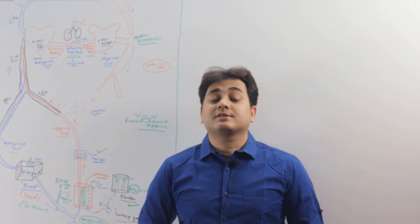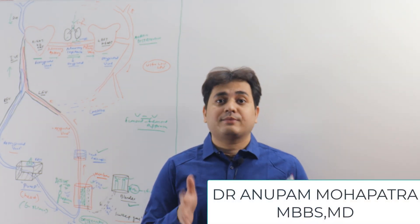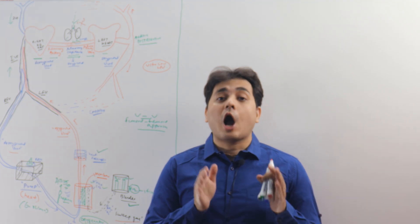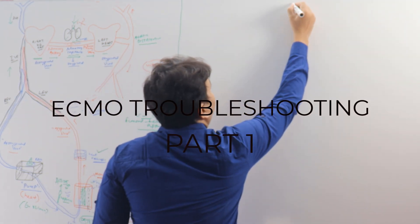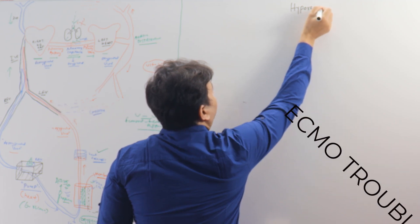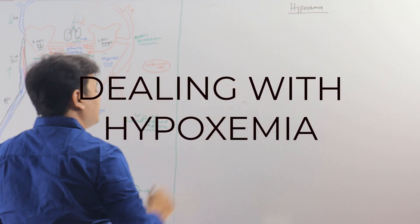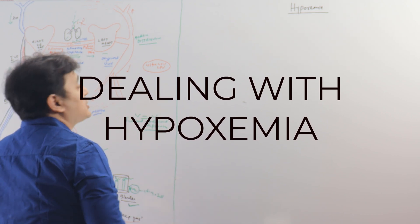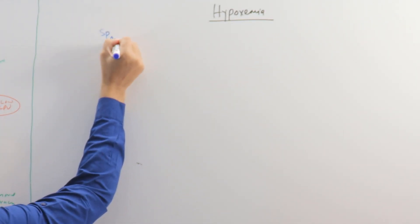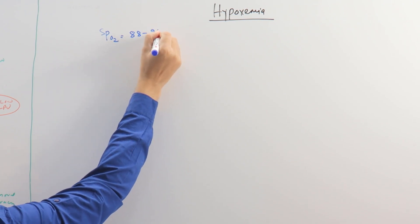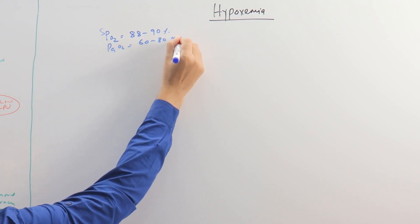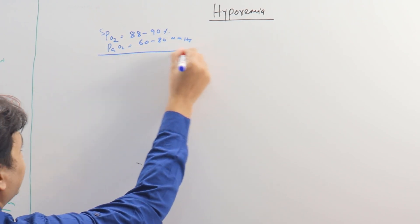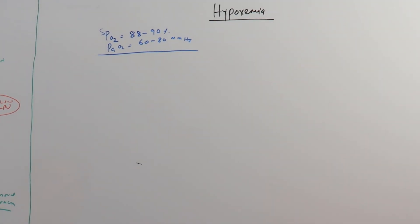Welcome to ECMO class number 3 on troubleshooting. Today we'll discuss how to troubleshoot hypoxemia. Different guidelines have given different targets for oxygenation. We will take our target of oxygenation as 88 to 90 percent, or a PO2 of 60 to 80 millimeter of Hg. When these values are less than this, it is called hypoxemia.